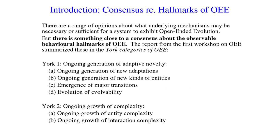Let's start on firm ground. While there are a range of opinions about what underlying mechanisms may be necessary or sufficient for a system to exhibit Open Ended Evolution, there is something close to a consensus about the observable behavioural hallmarks of Open Ended Evolution. In large part, this consensus was reached at the first workshop on Open Ended Evolution in York, and through the collective writing of the report that followed it. That gave us the York categories of Open Ended Evolution. The first relates to the ongoing generation of adaptive novelty, with subcategories for new adaptations, new kinds of entities, as well as major transitions and the evolution of evolvability.